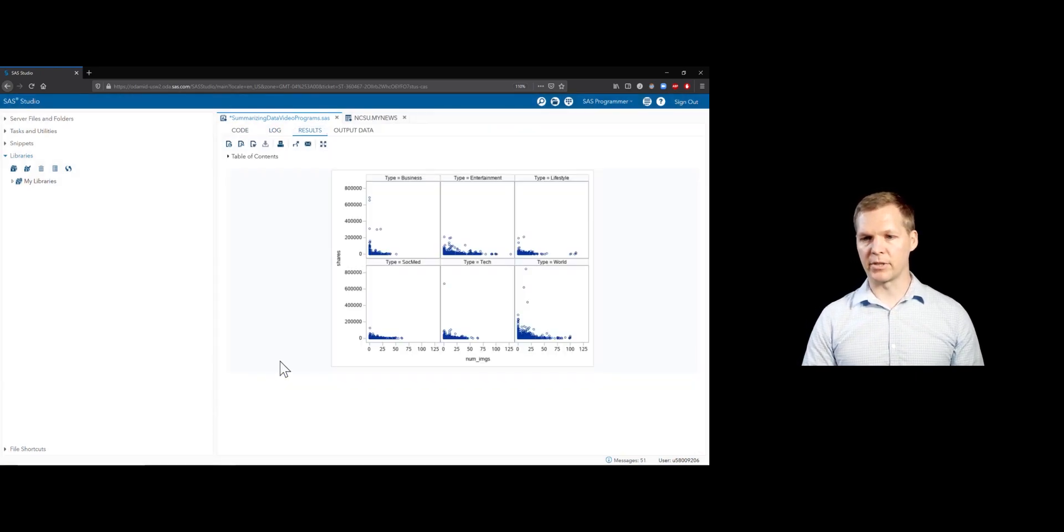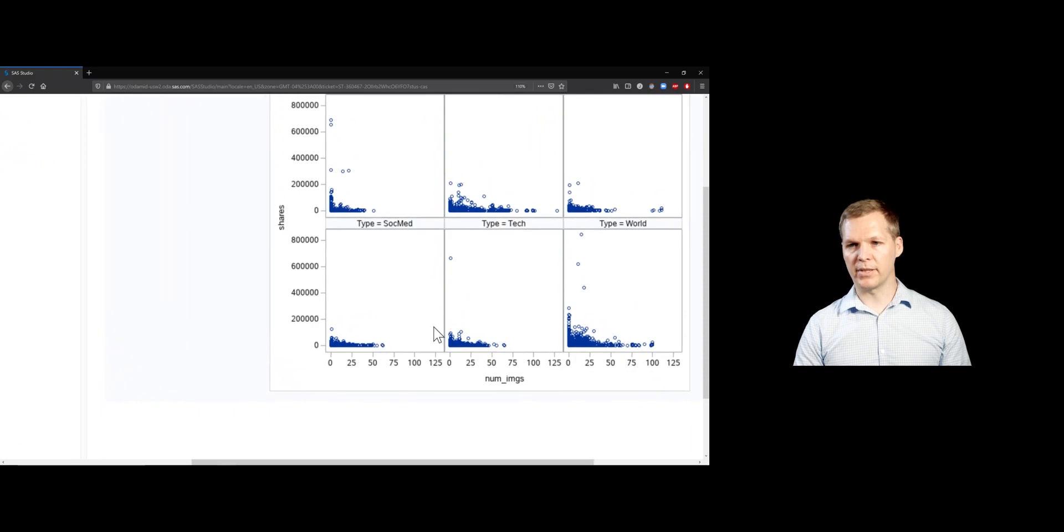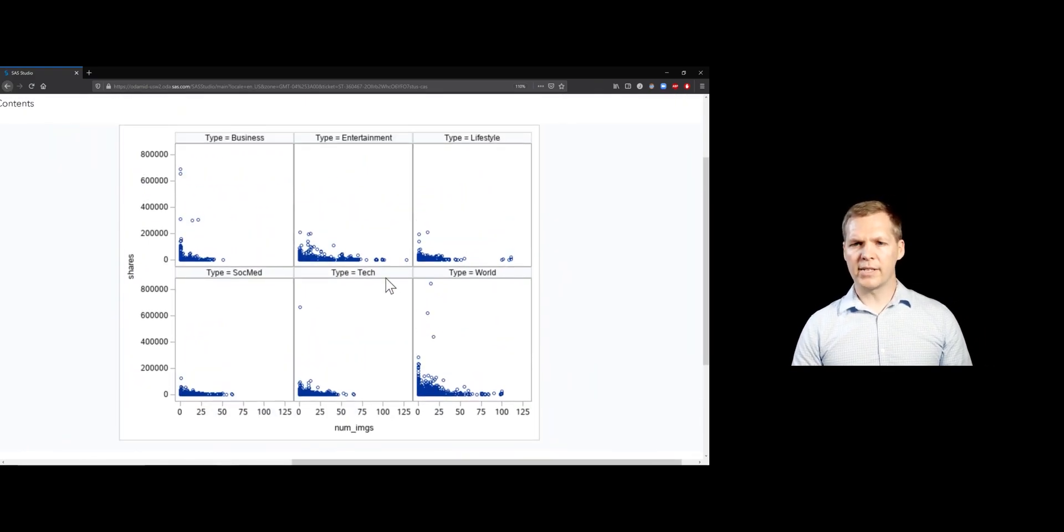All right. And so this kicks out a bunch of scatter plots for us. Let's zoom in a little bit, check them out. Well, we can see that there tend to be more images in the entertainment group. But the relationships between images and shares looks like it's kind of roughly the same. We're not seeing much of a relationship in any of those.